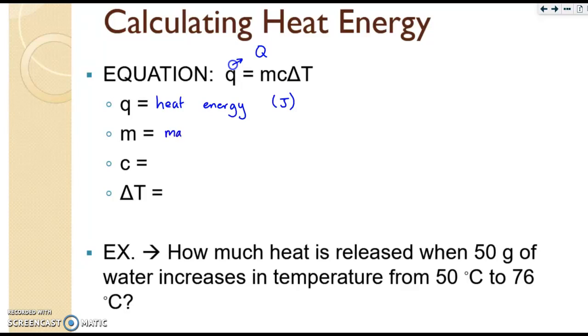M, of course, stands for mass. And the unit you'll be primarily using is grams. C stands for specific heat. And its unit is joules divided by grams degrees Celsius. And delta T is always the final temperature minus the initial temperature. Triangle means change. It's always final minus initial. And the unit, of course, will be degrees C.